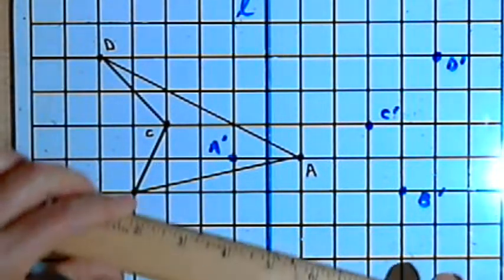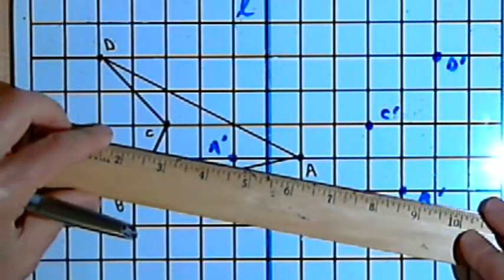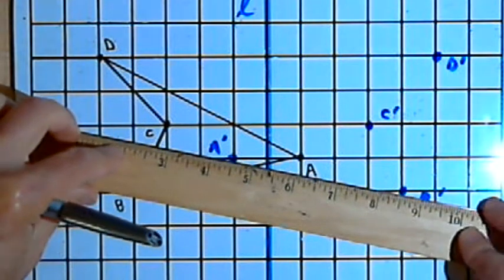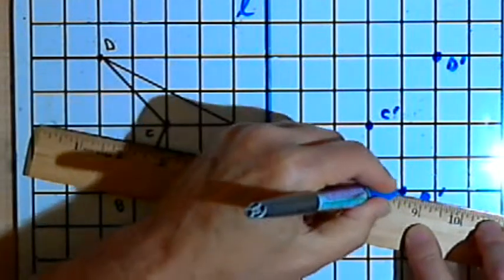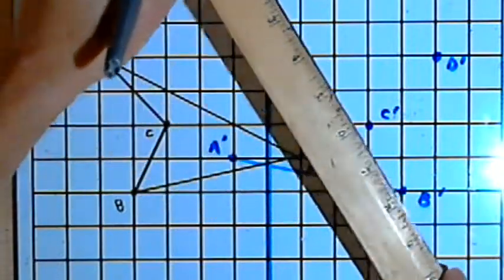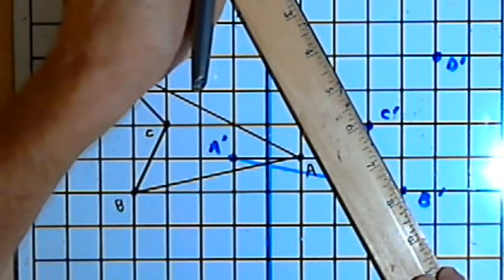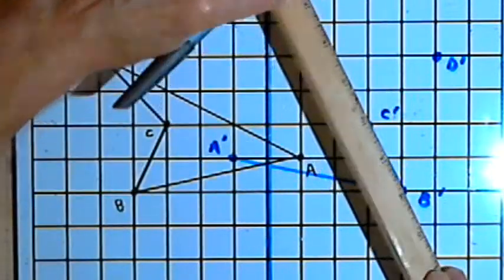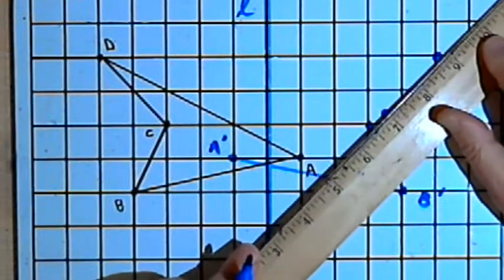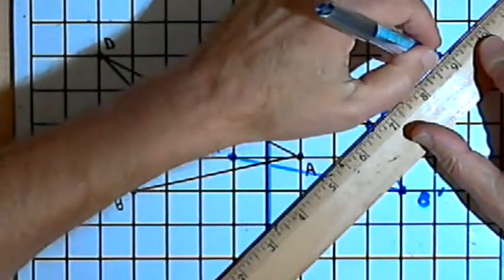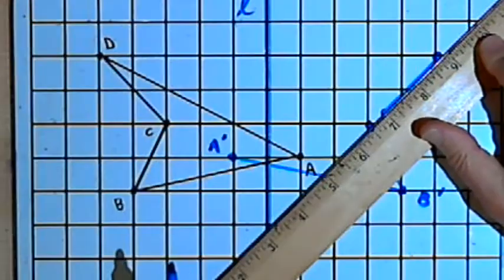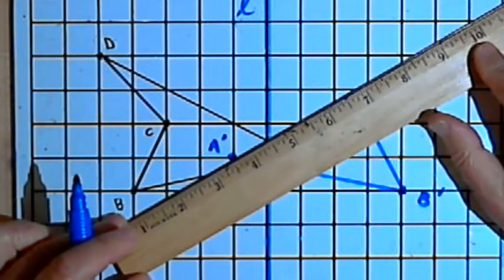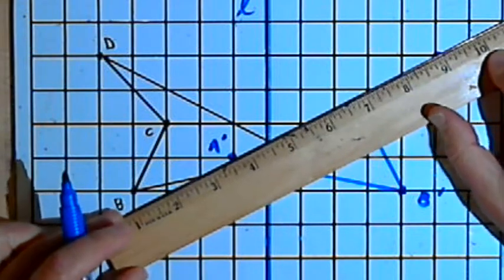Now I've just got to take a straight edge and I'll connect points A prime and B prime. I'll then go to B prime, B prime to C prime, C prime to D prime, D prime to A prime.